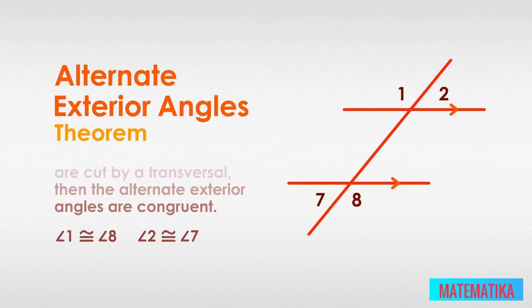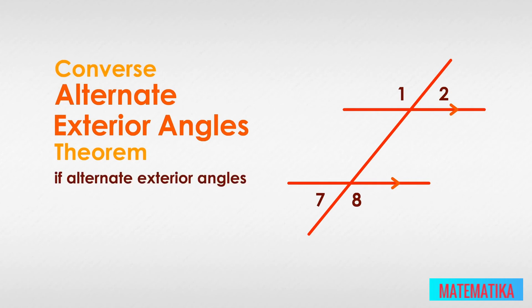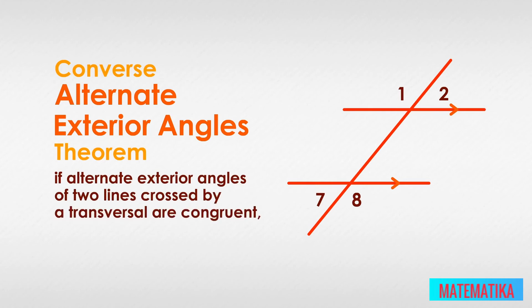Next, let's talk about the converse of the Alternate Exterior Angles Theorem, which is also true. The converse states that if alternate exterior angles of two lines crossed by a transversal are congruent, then the two lines are parallel.